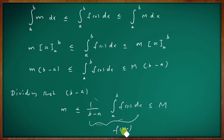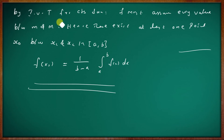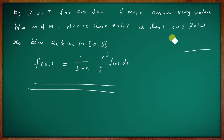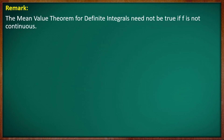By the intermediate value theorem for the continuous function, f must assume every value between m and M. Hence there exists at least one point x₀ between x₁ and x₂ in the closed interval [a, b]. Remark: The mean value theorem for definite integrals need not be true if the function is not continuous.